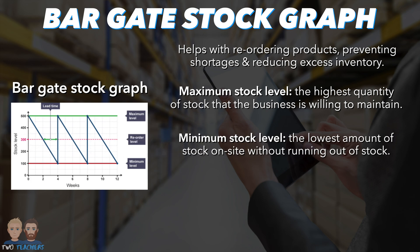Minimum Stock Level is the lowest amount of stock a business can keep on site while still operating effectively and avoiding running out of stock. In our example, the minimum level is 100 units.